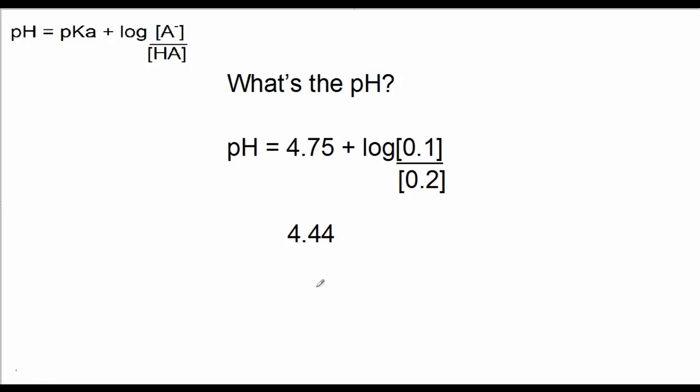Well, if you came up with 4.44, which is less than 4.75, indicating that it's slightly more acidic, you'd be correct because it's got to make sense. A little more acid than base, so it's going to bring the pH down just a bit.